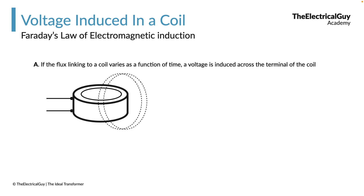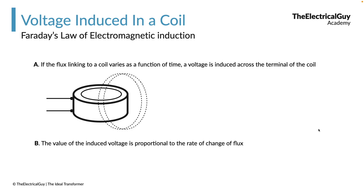The next question is: on what basis do we decide how much voltage will be induced in the coil? We are subjecting the coil to flux and varying it, but how much voltage will be induced? Fortunately, Faraday also gave the answer. He says the value of the induced voltage is proportional to the rate of change of flux. So if you vary the flux faster, a higher voltage will be induced; if you vary it slower, a lower voltage will be induced.